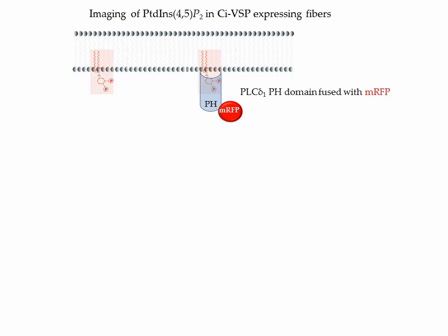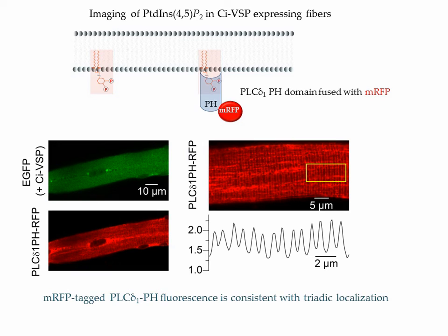Could it be that this molecule is PIP2? In order to check for this, we co-transfected muscle fibers with a plasmid encoding VSP and a plasmid encoding a protein domain that binds specifically to PIP2. This domain was the pleckstrin homology domain of phospholipase C delta-1, fused with mRFP. The plasmid was a generous gift from Tamas Balla from the NIH. Here are confocal images of a co-transfected muscle fiber, showing EGFP from the VSP plasmid and mRFP fluorescence yielding a transverse striated pattern with double peaks separated by 2 micrometers, consistent with the probe being bound to PIP2 in the transverse tubule membrane of the muscle fiber.